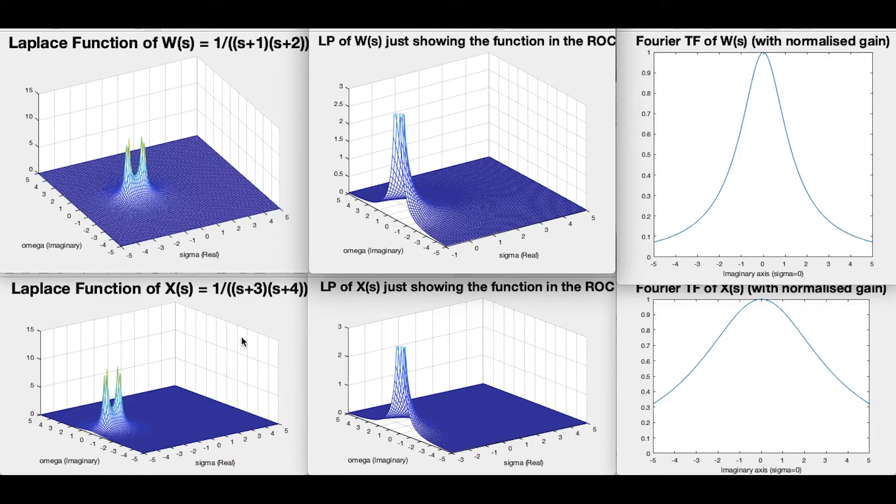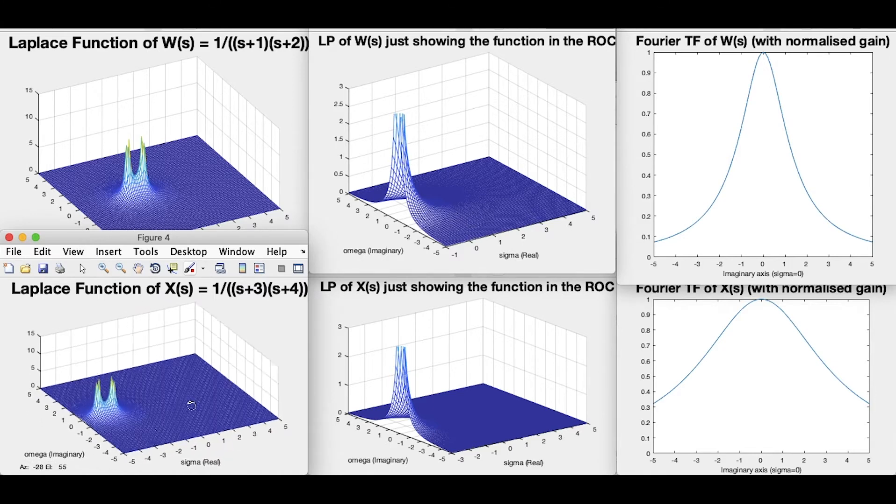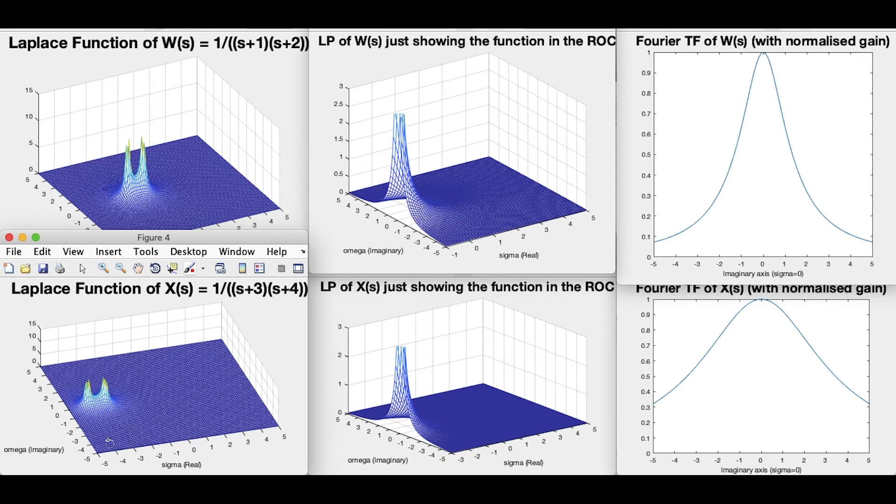Let's look at the ones along the bottom. What have we done here? Well, we've just shifted the poles along to be more negative. So we've got s is minus three and s is minus four is the location of the poles in this example here. And you can see this picture here looks very much like the one above, except clearly the poles have moved along to minus three and minus four.